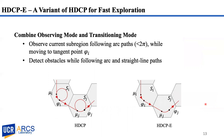In some scenarios, full coverage within subregions does not need to be enforced. In this case, the exploration process of unknown environments can be accelerated by combining observing and transitioning modes. In HDCPE, full circle passes are removed from planned passes to accelerate exploration of small hexagon subregions. At the same time, observation sensors are enabled throughout the process.